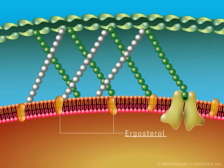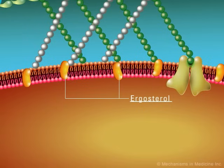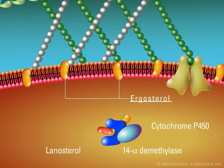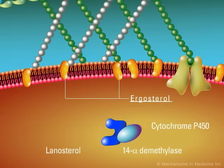In most fungi, ergosterol replaces the cholesterol component found in higher eukaryotic cell membranes. Ergosterol provides stability and flexibility to the fungal cell membrane. Although many enzymes are involved in the formation of ergosterol, the 14-alpha-demethylase enzyme is responsible for the C14-alpha-demethylation of lanosterol. 14-alpha-demethylase is a cytochrome P450-dependent enzyme which is essential for ergosterol formation. Once formed, ergosterol is incorporated into the fungal cell membrane.